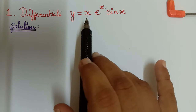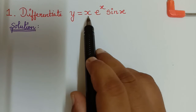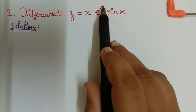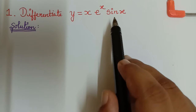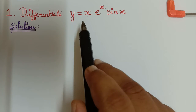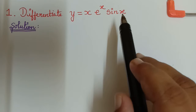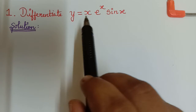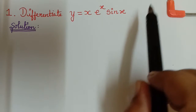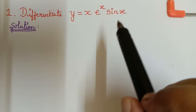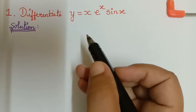This can also be differentiated by considering x as u, e power x as v, and sin x as w, and it can be done by the method of UVW. But in order to learn logarithmic differentiation, we take this problem as a basic one and we proceed with logarithmic differentiation.